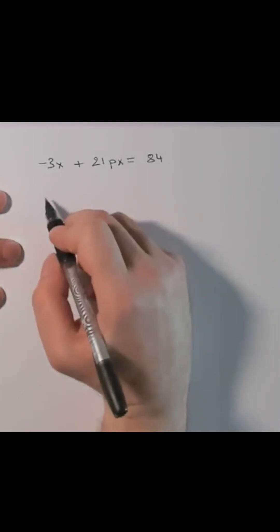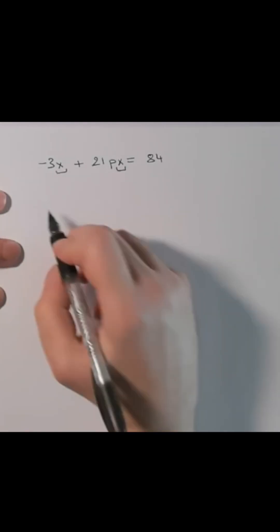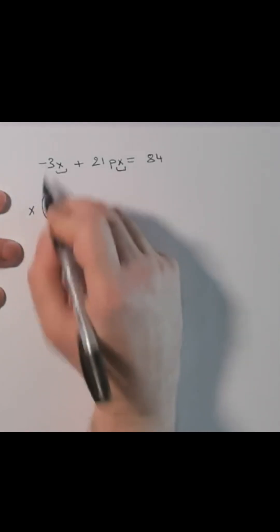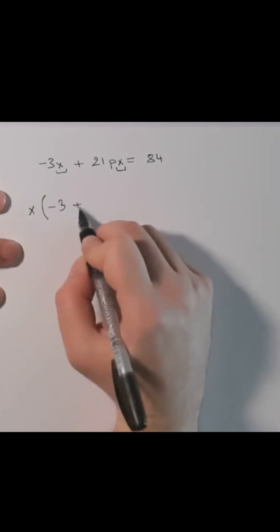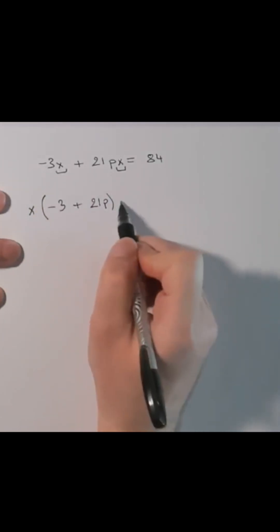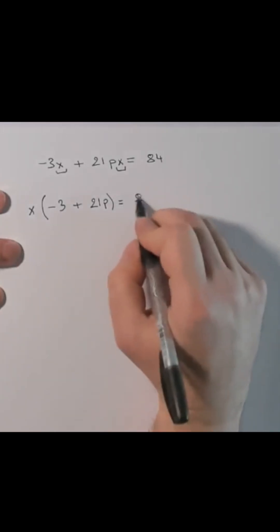Here x is taken as a common factor and we are left with minus 3 plus 21p, which is equal to 84.